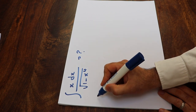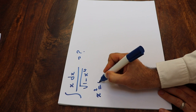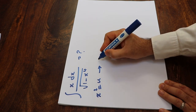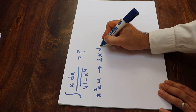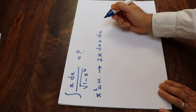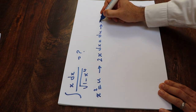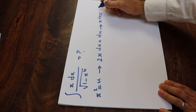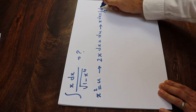If you define x² as u and take the derivative from each side of this equation, you get 2x dx equal to du. In other words, x dx will be equal to 1/2 du.